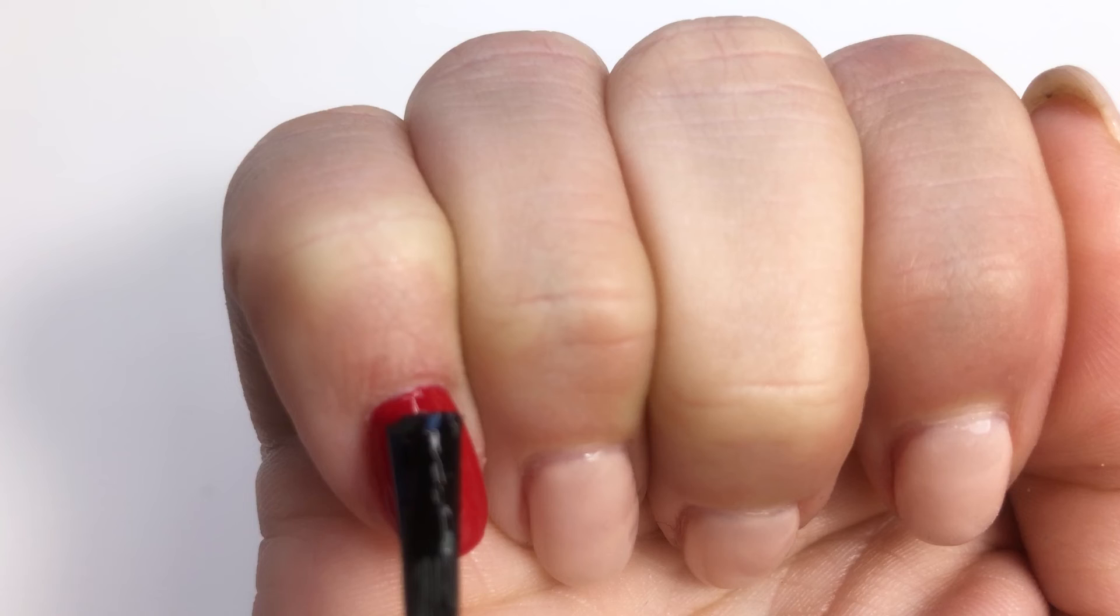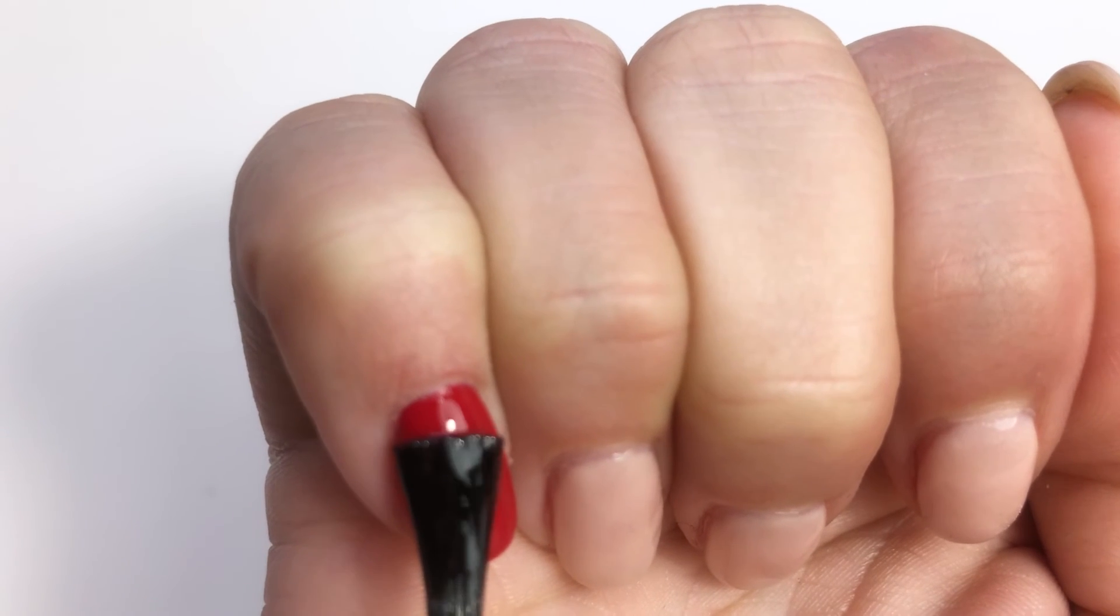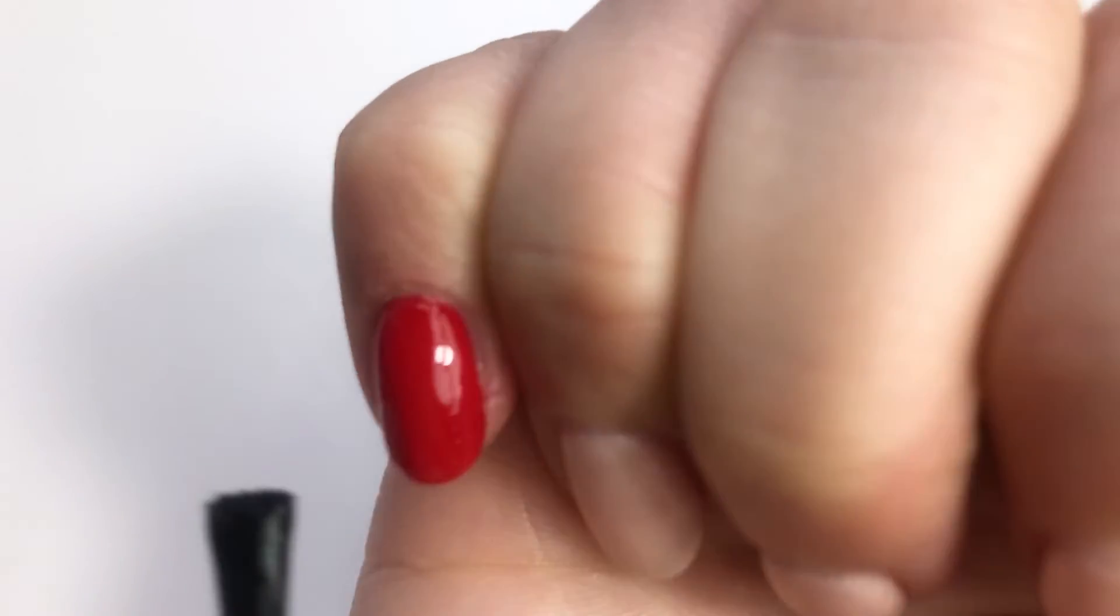Then I applied my top coat and make sure that it's completely covering the whole nail including the free edge and the side walls and that it's nice and smooth.